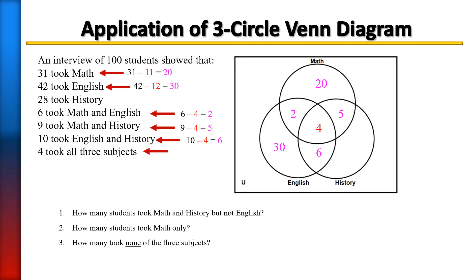Moving on to find out the history only. There are already people inside the history, so let's count how many are there. We have 6 plus 4 is 10, plus 5 is 15. There are 28 that took history, so we're going to subtract 15 from that 28, which will give us 13 that only took history.